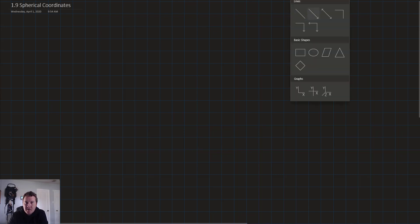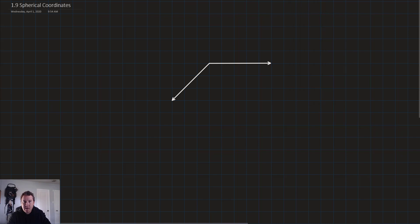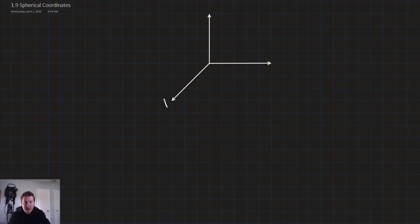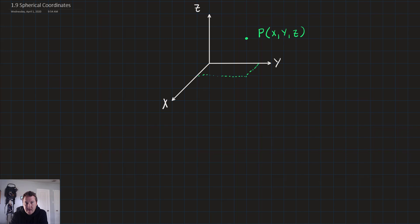First things first, just like we did with cylindrical coordinates, let's take a look at that XYZ plane that we are used to working with. We've got an X axis, Y axis, and Z axis. Let's imagine that we have a point, and that point in rectangular coordinates has got X, Y, and Z as its coordinates — sitting on the XY plane, with components going to the X axis, Y axis, and a line coming down from the Z axis.